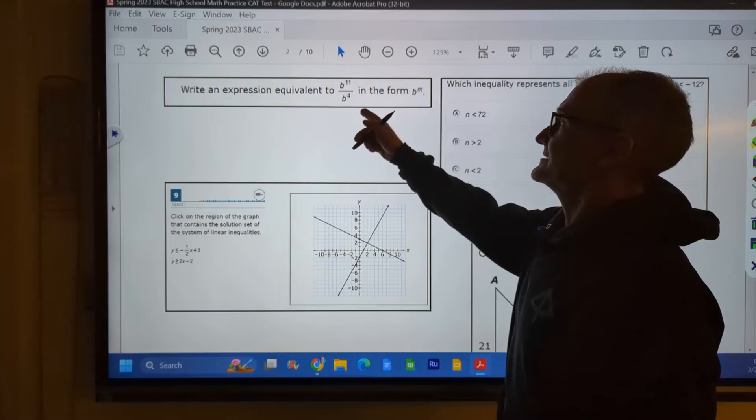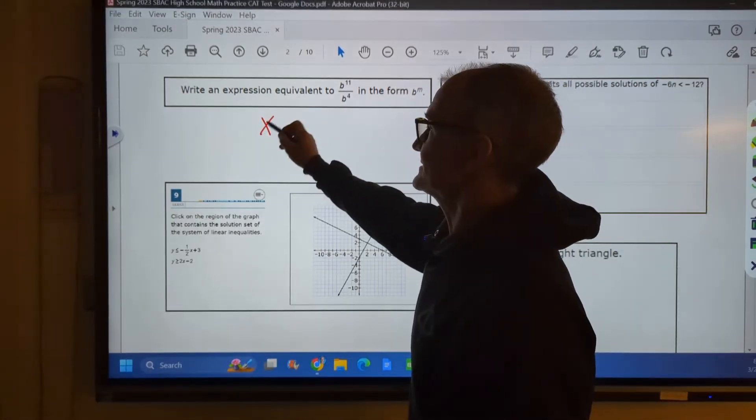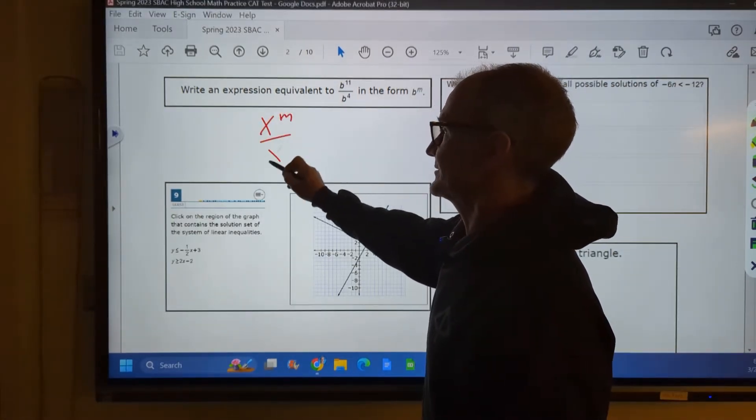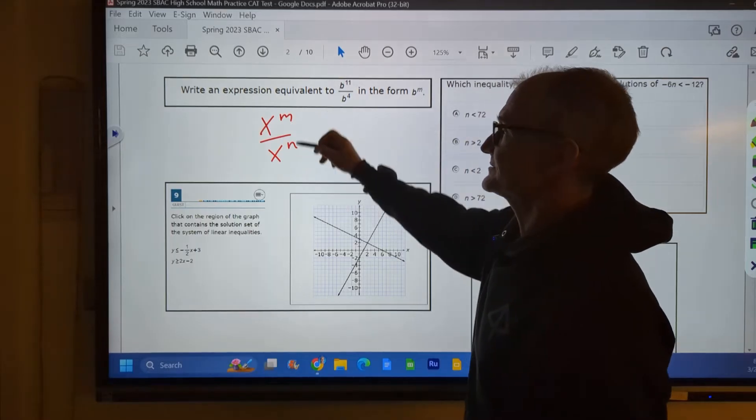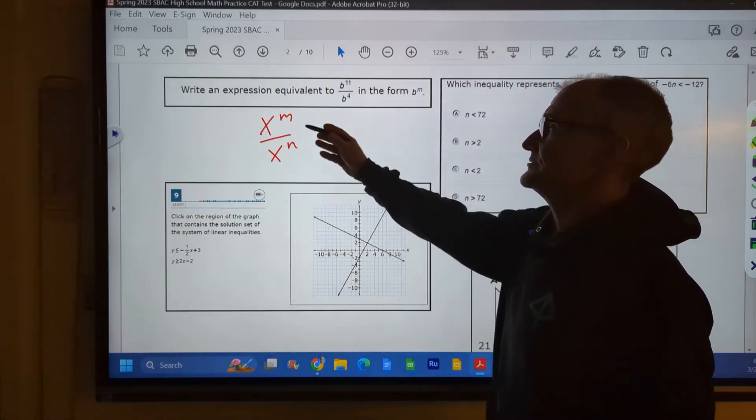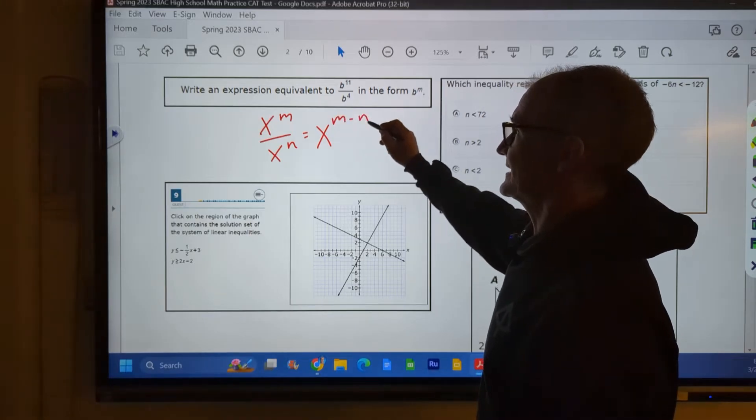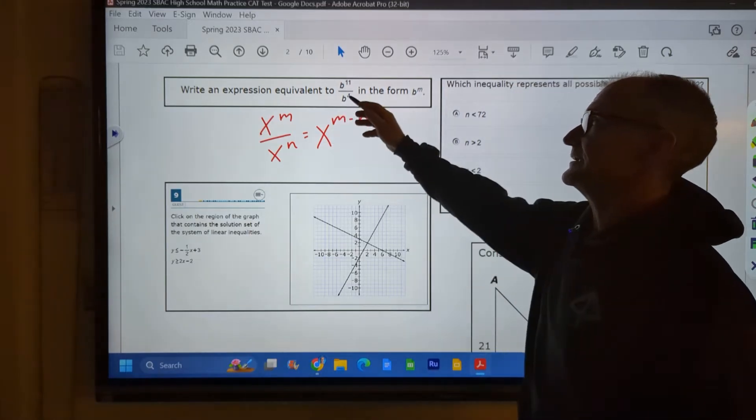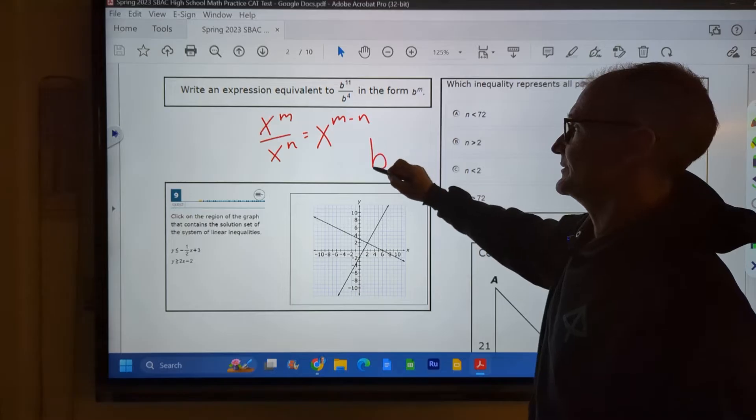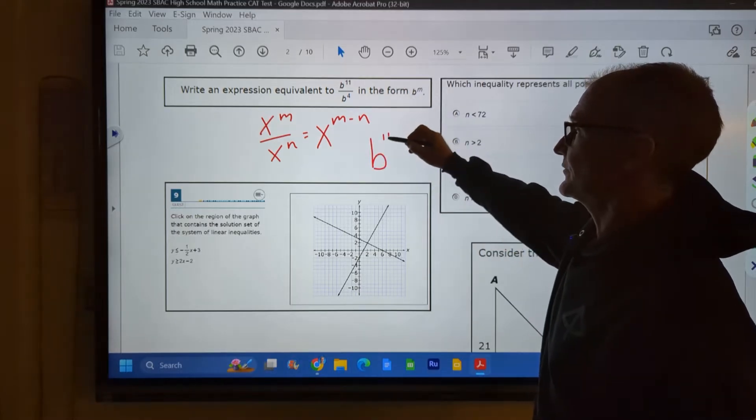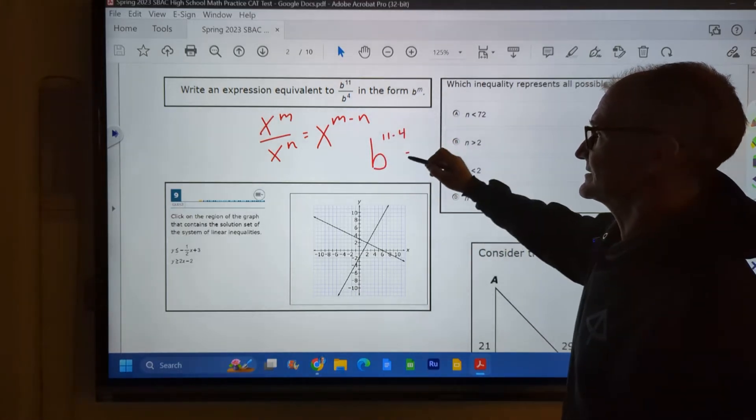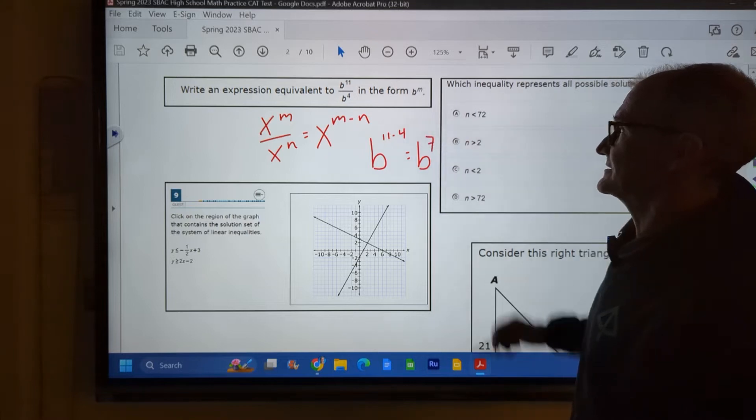All right, next problem. Write the expression equivalent to this. The rule here is if the bases are the same, so the bases are x and the exponents are different or the same, you subtract them. So this is equal to x to the m minus n. So that's the rule right here. The bases are the same. So I have b to the 11 minus 4 is 7. So this is equal to b to the 7th.